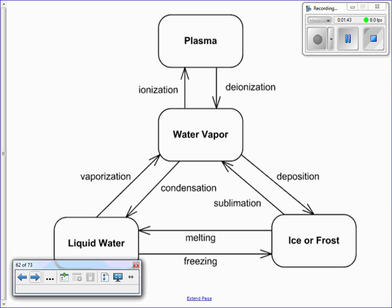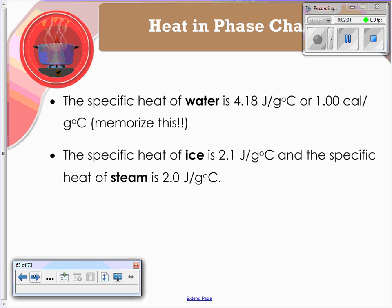This chart is a really good reference to write down. You will have to have it memorized, but it gives you a good look at what's happening when you're going between liquid water, ice and frost, and water vapor. It also includes plasma up there at the top with ionization and deionization just for your reference. Here it is for easy reference — the specific heat of water and the specific heat of ice and steam.